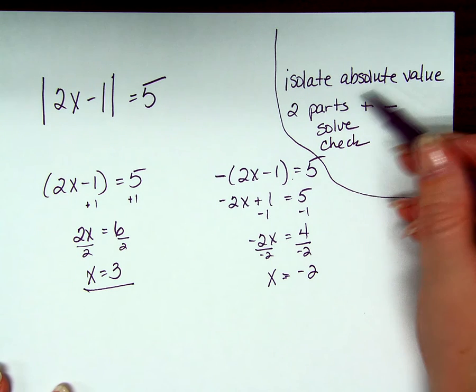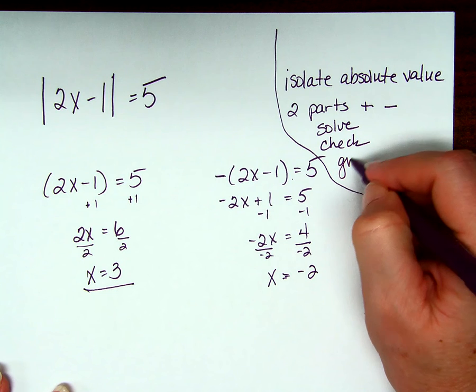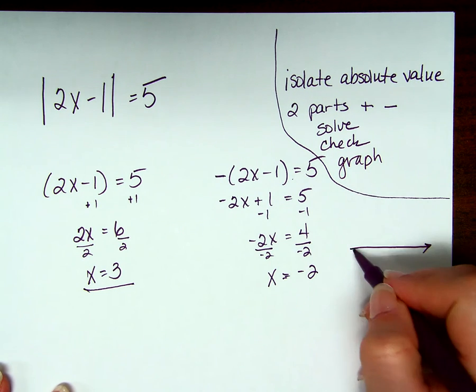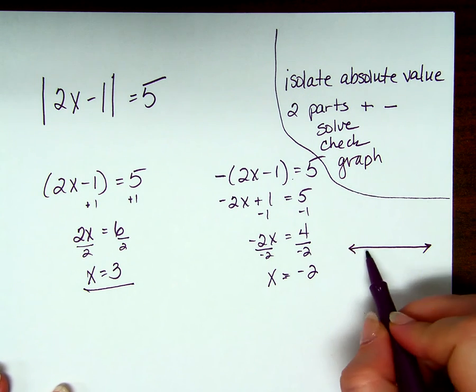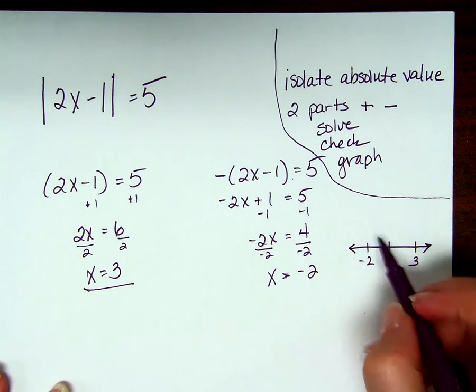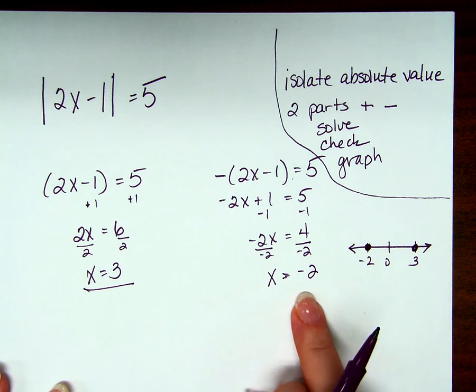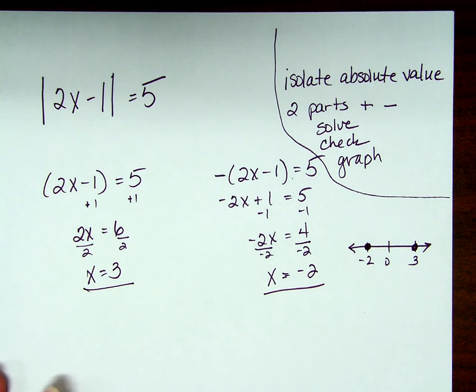After we isolate it, after we put it in two parts, after we solve it, after we check it, we need to graph it. Not so important graphing it as it is when it's an inequality, but still the graph is important. Because I have two values. One is negative 2, one is 3. Can I give you a really, really, really easy problem? First of all, do you have any questions about this?